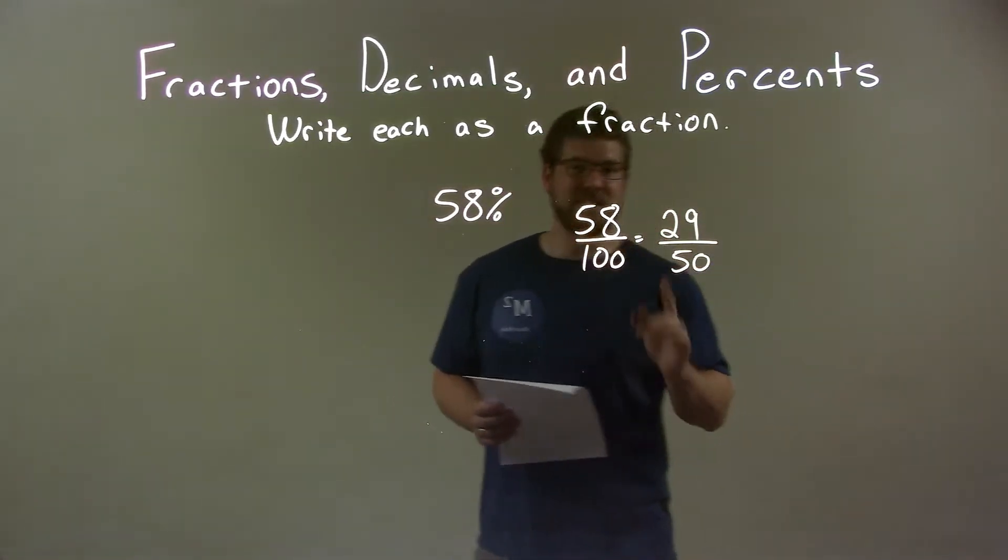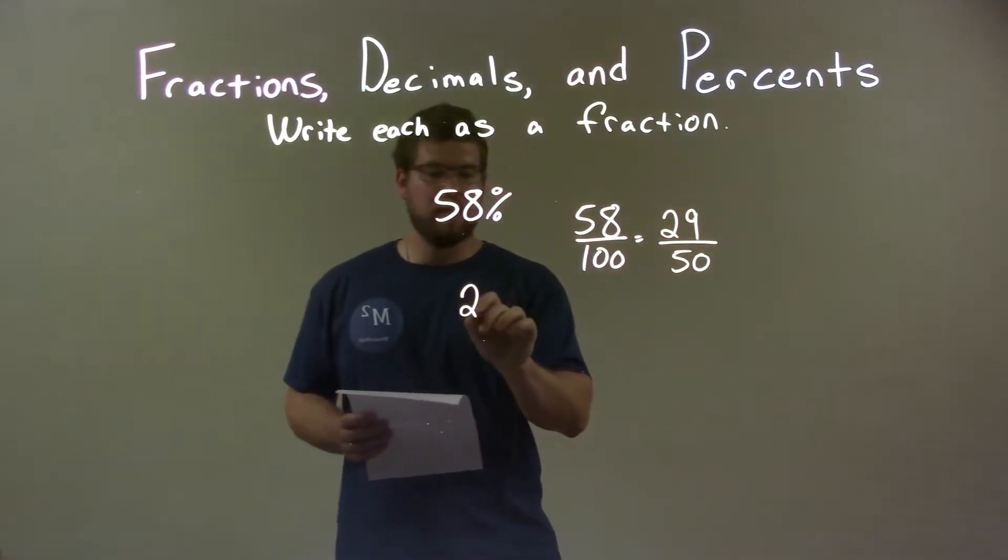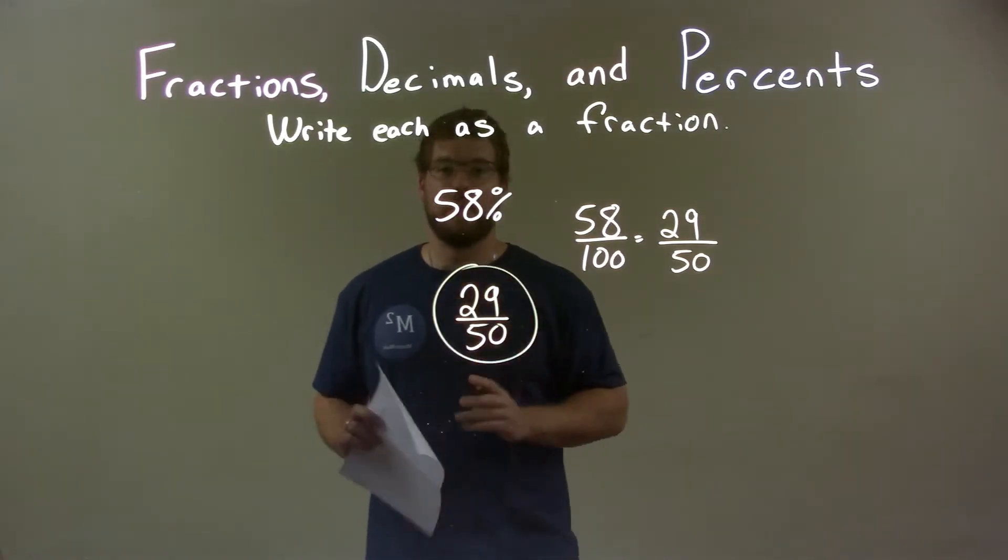And we're actually done here. 29 over 50, there's nothing else, no other way that we can simplify that. So our final answer is just 29 over 50. There we have it.